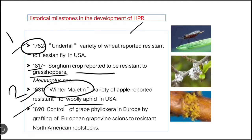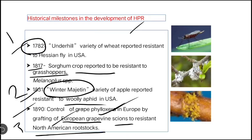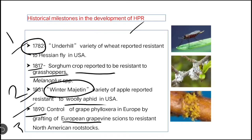In the year 1890 — also important — control of grape phylloxera in Europe was achieved by grafting European grapevine skins onto resistant North American rootstock. Grape phylloxera was causing great loss to the wine industry in Europe, so they grafted using the resistant North American rootstock, which showed resistance against grape phylloxera.